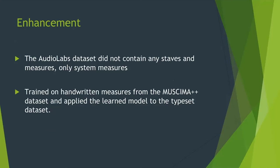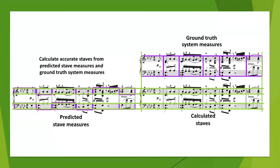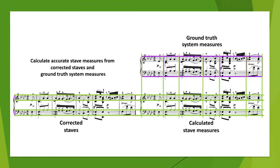We did that by training on the MUSCIMA++ dataset and putting that model onto the AudioLabs dataset. You can see the ground truth system measures that already existed in purple or violet, and on the bottom left you can see the predicted staff measures from the neural network. We overlapped those to get calculated or approximated staves.